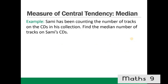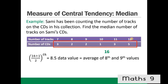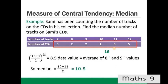Example: Sammy has been counting the number of tracks on his CDs. There are 16 CDs altogether (3+2+2+1+3+5), so we want position (16+1)/2 = 8.5 — the average of the 8th and 9th values. Counting through the frequencies: 3, then 5, then 7 — the 8th value is 10 tracks and the 9th is 11 tracks. The median is (10+11)/2 = 10.5 tracks.